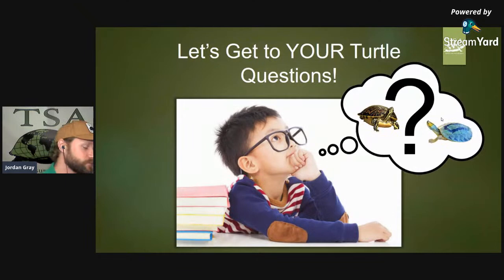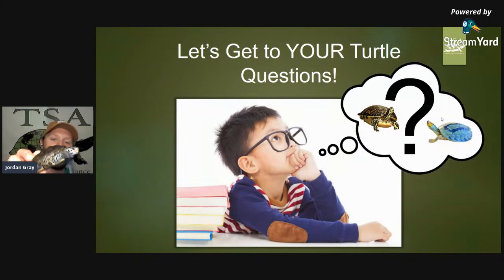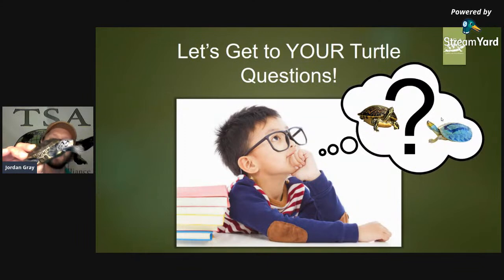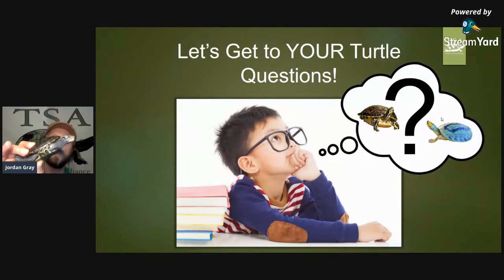Now I'm bringing out another turtle: the diamondback terrapin. This is a Northern diamondback terrapin, a species that lives along the Atlantic coast. The Northern diamondback terrapin ranges from Massachusetts down to about central North Carolina, where they intergrade with the Carolina diamondback terrapin, which then continues through Southern North Carolina, South Carolina, Georgia, and Northern Florida.